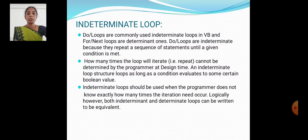Do loops are commonly used as indeterminate loops in VB, and For Next loops are determinate ones. Do loops are indeterminate because they repeat a sequence of statements until a given condition is met. How many times the loop will iterate cannot be determined by the programmer at design time.